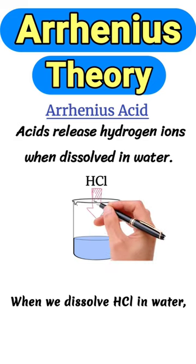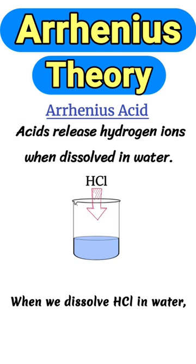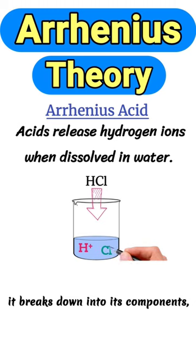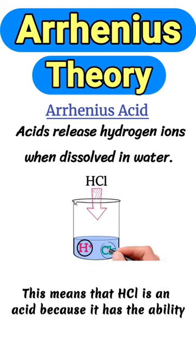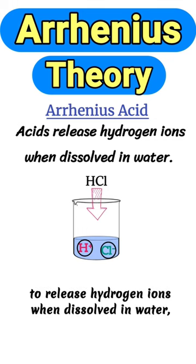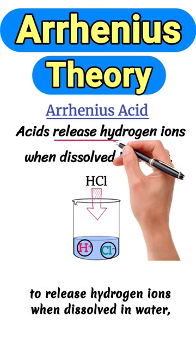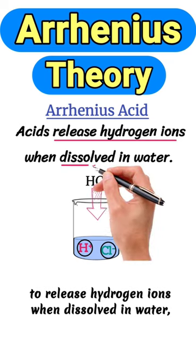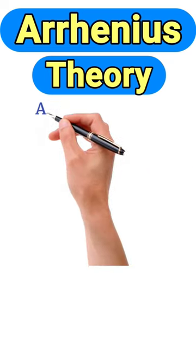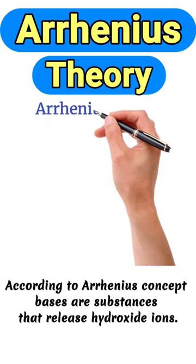When we dissolve HCl in water, it breaks down into its components: hydrogen ions and chloride ions. This means that HCl is an acid because it has the ability to release hydrogen ions when dissolved in water, according to Arrhenius's concept.